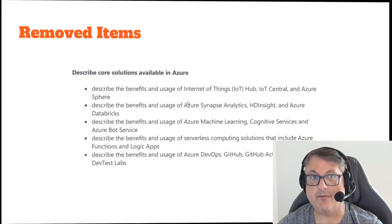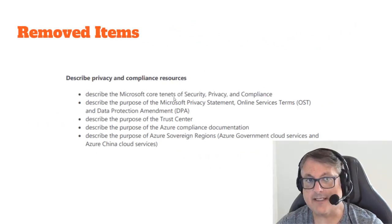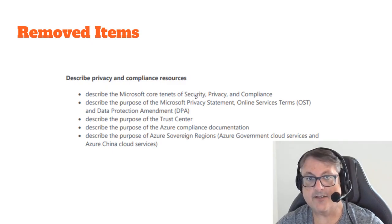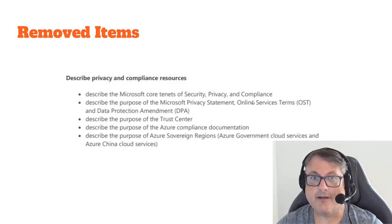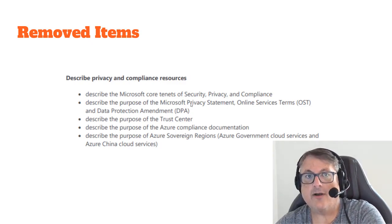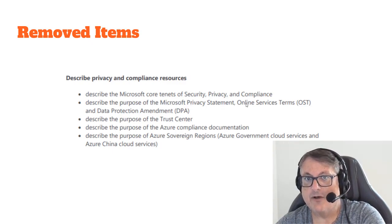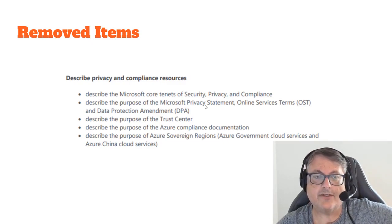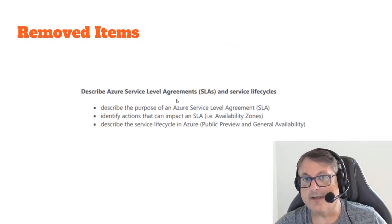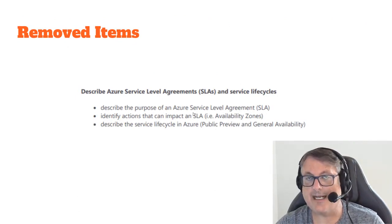Some other things that are not specific enough about Azure to be testable — having to do with privacy and compliance — have also been removed. The security, privacy, and compliance section including the privacy statement is gone. I've always wondered what Microsoft would ask you on the AZ-900 exam about the privacy statement. Sovereign regions is still on there, but the rest has been removed. Service level agreements and service lifecycle concepts like public preview, general availability, and SLAs have all been removed — it's just too basic a topic.